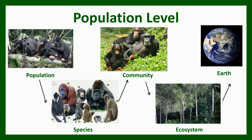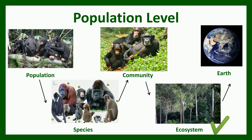At a higher tier of biological organization, populations of organisms interact with each other and their physical environment. Together, populations and their environment constitute an ecosystem. The entire planet can be thought of as an ecosystem that we call the biosphere.